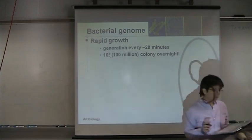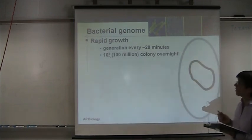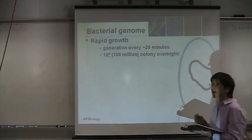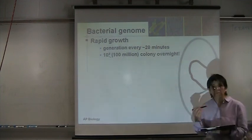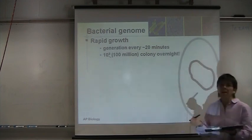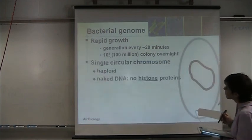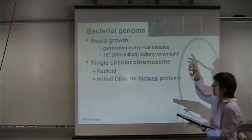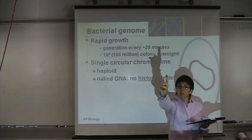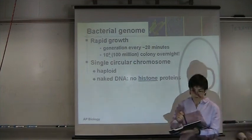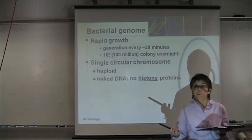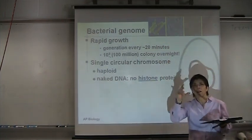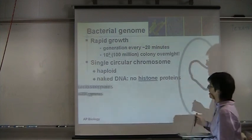Let's start with bacteria, because that's one of our main tools. Bacteria can divide very rapidly — sometimes in the lab every 20 minutes. You can have a significant amount of bacteria just overnight, and we'll see that when we do our transformation lab next week. Bacteria have a single circular chromosome. It's still a double helix, but it's circular. It's haploid because they only have one chromosome. Characteristic of prokaryotes is that the chromosome doesn't have histones — the DNA is not wrapped around histones.